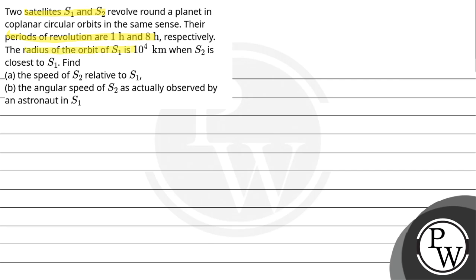The radius of the orbit of S1 is 10^4 km when S2 is closest to S1. Find: (a) the speed of S2 relative to S1, and (b) the angular speed of S2 as actually observed by an astronaut in S1.